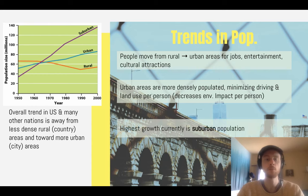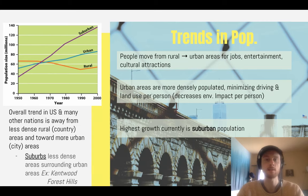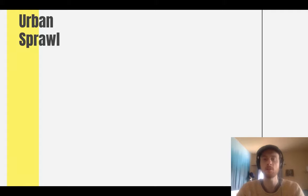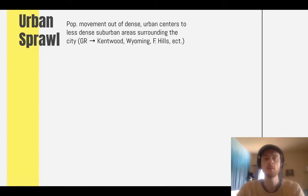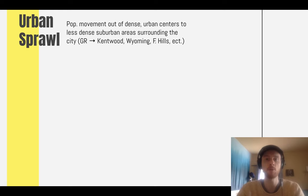Notably, looking at the graph, the highest growth currently is in the suburban population — less densely packed areas that surround urban areas. This shift in population from dense urban areas out to the suburbs creates a problem called urban sprawl. This is the movement away from densely packed urban areas out to the less dense suburbs that surround them. For example, suburbs of Grand Rapids would include Kentwood, Wyoming, and Forest Hills — less dense communities surrounding the dense urban area.